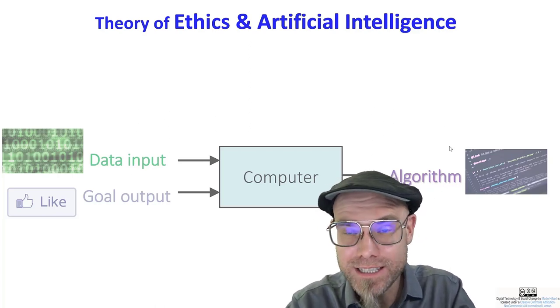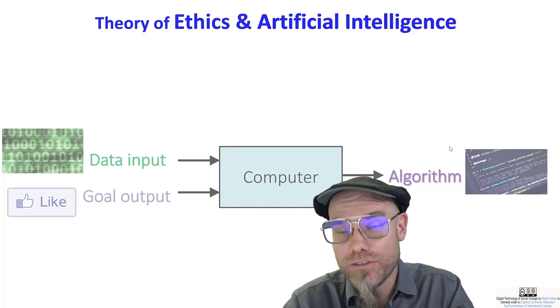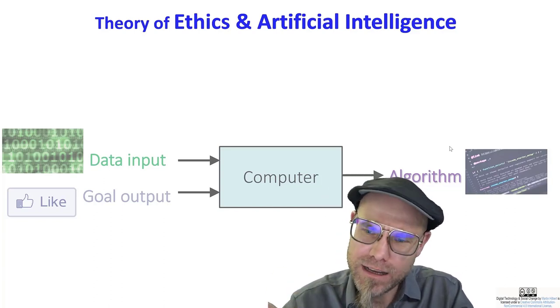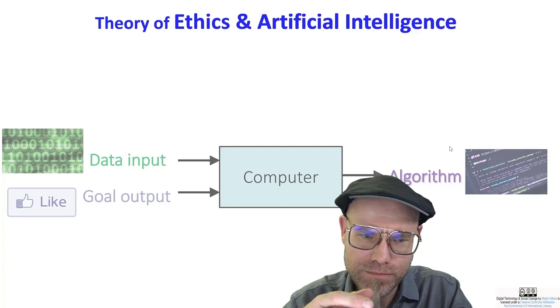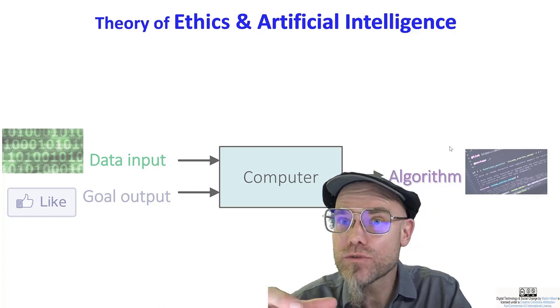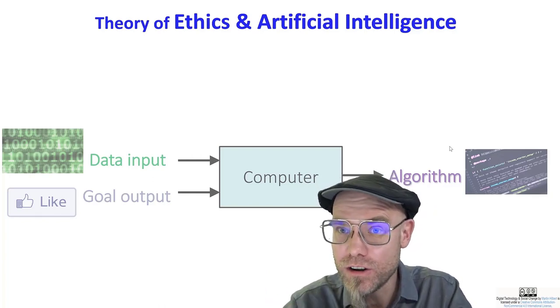So in school of ethics, we have different schools of thought, and they actually line up. The three dominant ones line up perfectly with these three building blocks that we have for the machine learning paradigm.